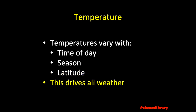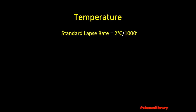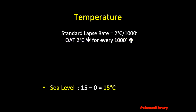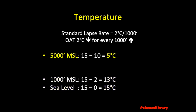As stated in the video over atmospheric composition and stability, the standard lapse rate is 2 degrees Celsius per every 1,000-foot altitude gain, meaning that in a perfect world the outside air temperature would decrease by 2 degrees for every 1,000 feet that we climb. Beginning with 15 degrees Celsius at sea level, the expected temperature at 1,000 feet would be 13 degrees, and at 5,000 feet the expected temperature would be 5 degrees Celsius.